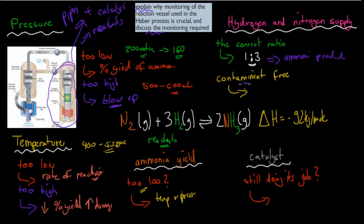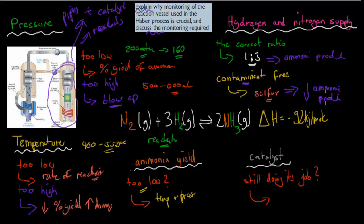We also need to make sure the reactant supply is contamination-free. For example, if there is sulfur in the actual reactant, that's going to lead to a decrease in ammonia production — contamination essentially poisons the process. So if we make sure there's no sulfur at all, we'll have no problem with ammonia production. It's the job of the production chemist to make sure the supply of nitrogen and hydrogen is contamination-free.